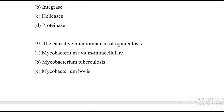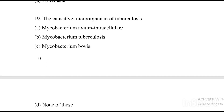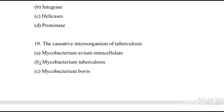Next question: The causative microorganism for tuberculosis is — Option A: Mycobacterium avium intracellulare. Option B: Mycobacterium tuberculosis. Option C: Mycobacterium bovis. Option D: none of these. The answer is Option B, Mycobacterium tuberculosis.